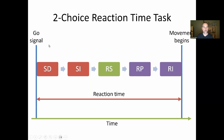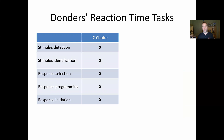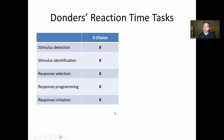In two-choice reaction time, Donders argued you have to go through all five sub-stages of information processing during the reaction time. Let's say the reaction time was 400 milliseconds — we'd know the sum duration of all five stages is 400 milliseconds. But Donders wants to measure these stages individually, so he looked at two additional reaction time tasks.